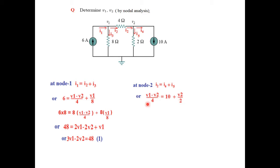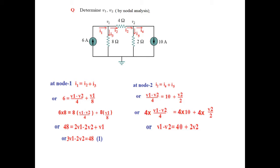The LCM here is 4, so we multiply both sides by 4. Simplifying: V1 minus V2 equals 40 plus 2V2. Grouping like terms gives us V1 minus 3V2 equals 40. This is our Equation 2.